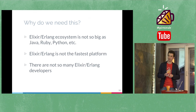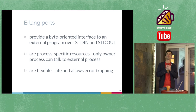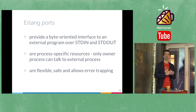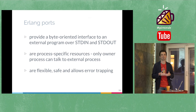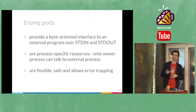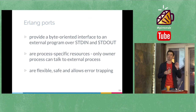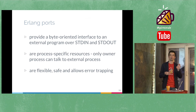Erlang has an abstraction for working with alias languages called Erlang ports. Erlang ports provide an interface to external programs using standard input and standard output. Erlang ports are process-specific resources, so only a predefined process can talk with an external process. This allows appropriate error trapping — your application will not crash if something went wrong with the external application.